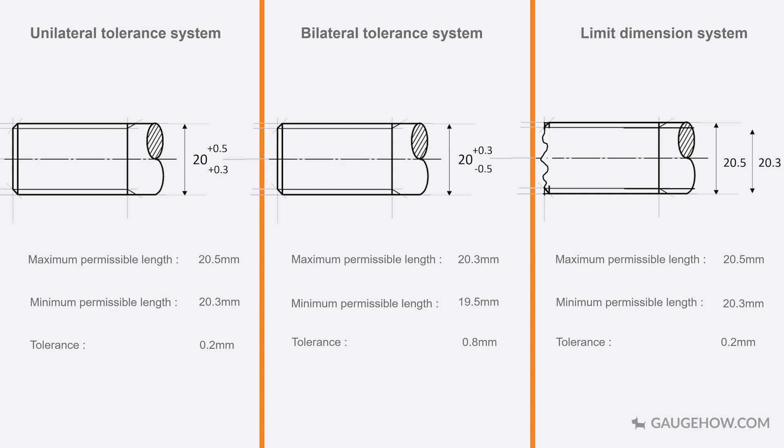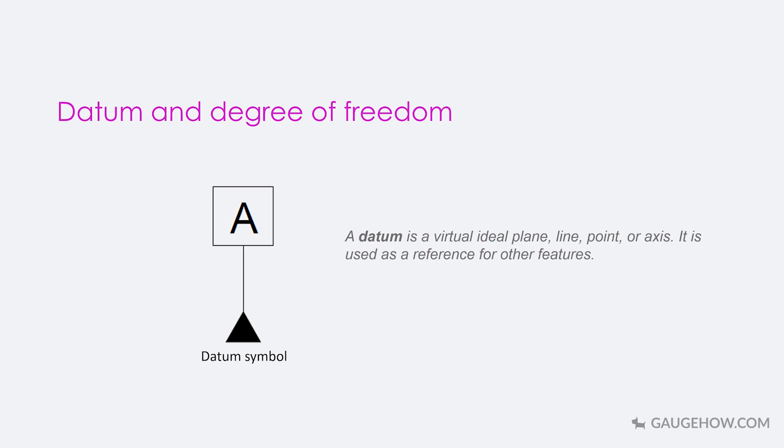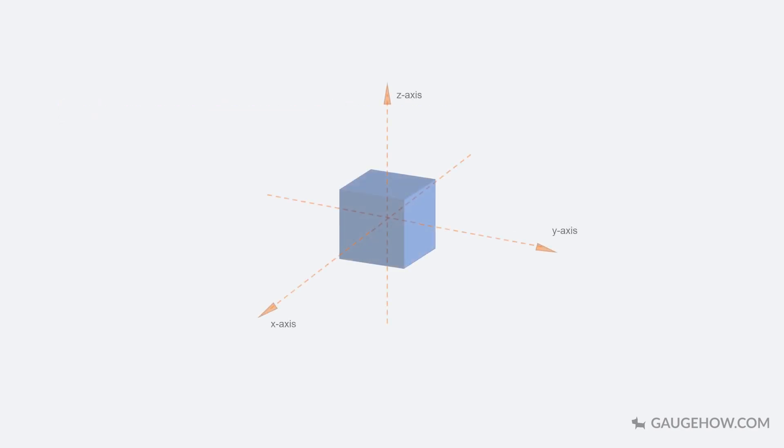Datum and degree of freedom. A datum is a virtual ideal plane, line, point or axis. It is used as a reference for other features. There are three kinds of datum: primary, secondary and tertiary datum. Degree of freedom in very simple terms is the number of directions of motion possible for a body. A rigid three-dimensional body like cube has six degrees of freedom: translation along x-direction, translation along y-direction, translation along z-direction, rotation about the x-axis, rotation about the y-axis and rotation about the z-axis.